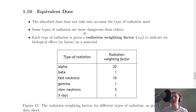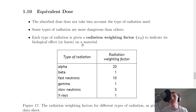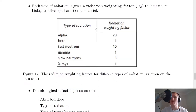This is pretty important for determining how dangerous radiation actually is, because some types of radiation are more dangerous than others. Each type of radiation is given a radiation weighting factor, which has the symbol W with a subscript R, to indicate its biological effect — or in other words its harm — on a material.